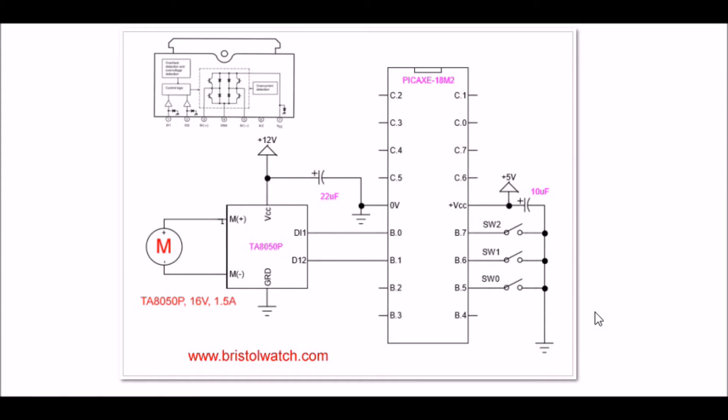Here's the schematic wiring the TA8050P to a PICAxe 18 M2 microcontroller. Very straightforward: two connections at B.0, B.1. Here are my three switches - stop, forward, reverse - whatever they're defined as in the program. That's it. You go over here to connect directly to your motor.